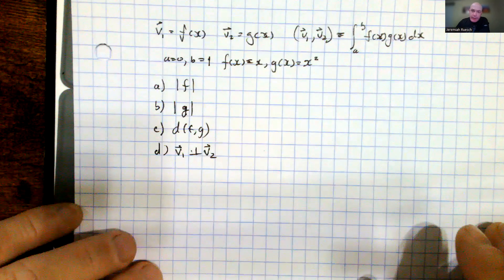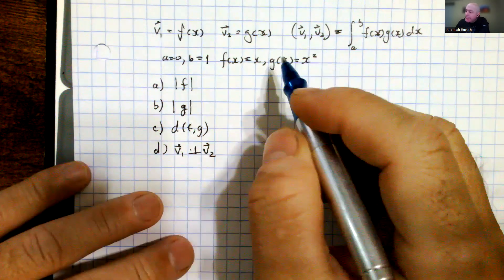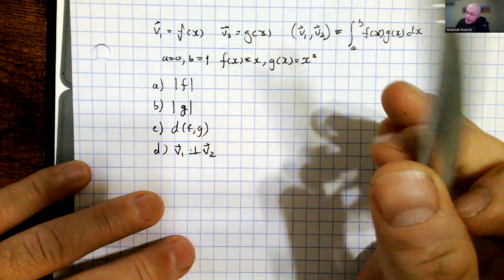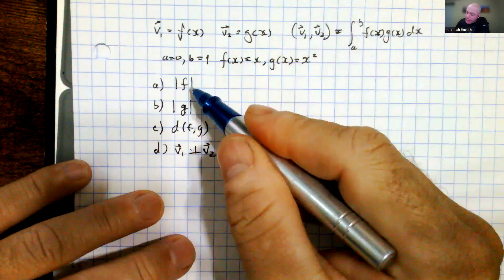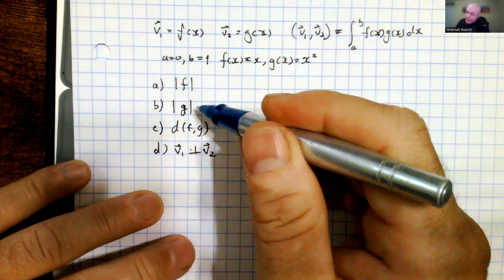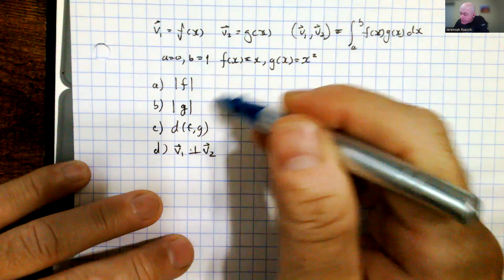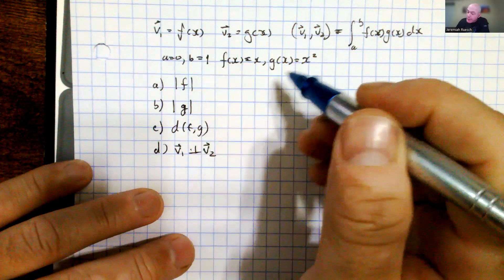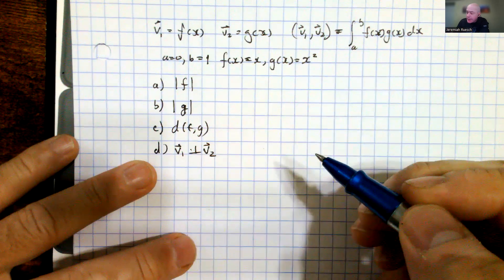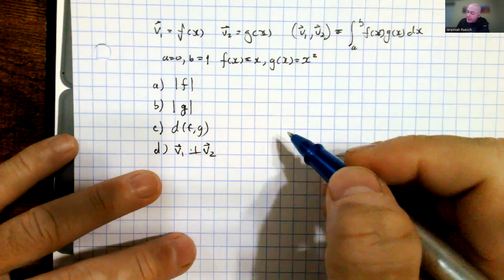In this example, we're going to look at computing the norm of vector f with this inner product, and then the norm of vector d2, which is g. We'll look at the distance between them and then determine if the vectors are perpendicular or orthogonal.